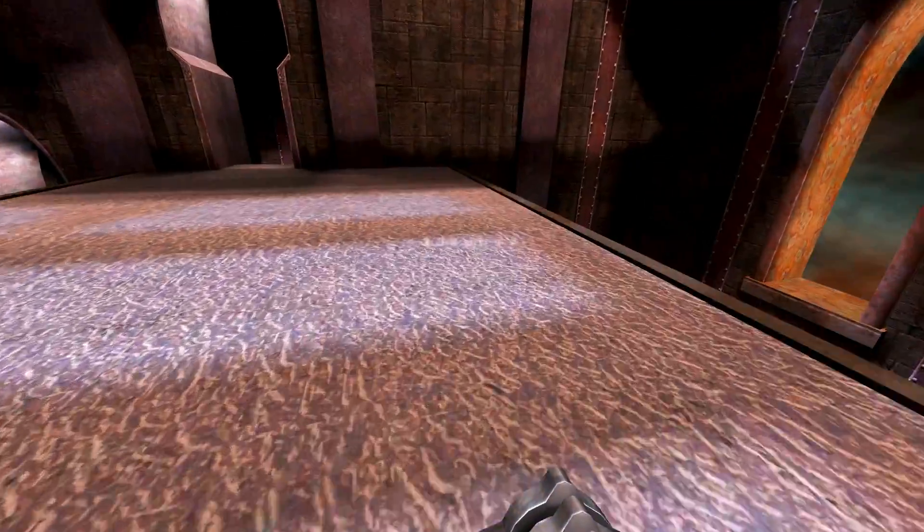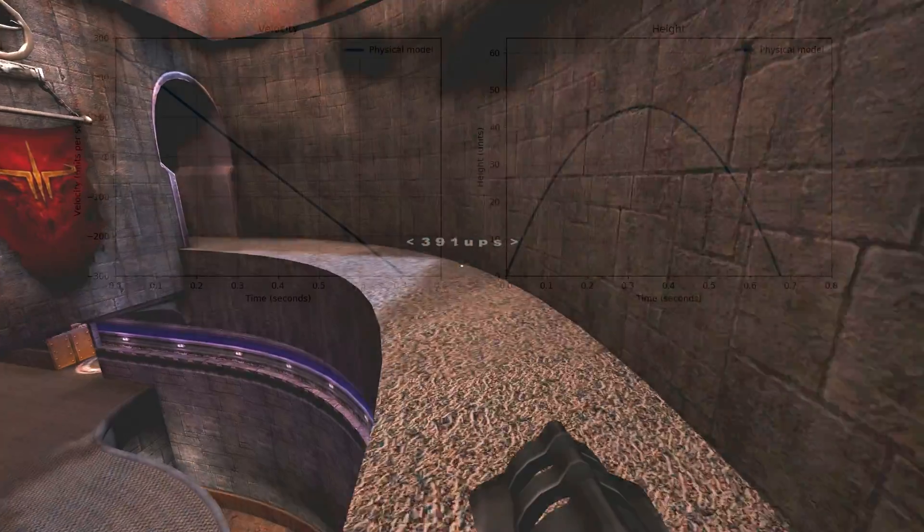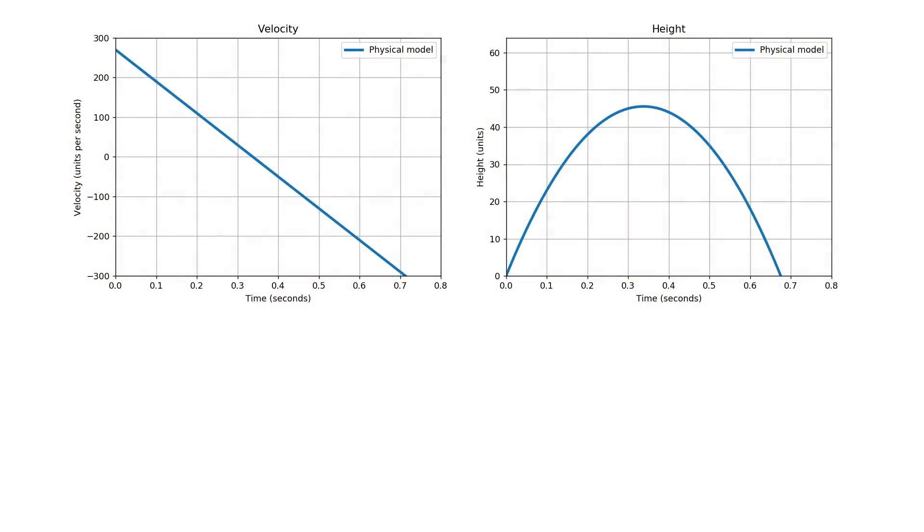Whilst moving horizontally this added height can enable the player to clear gaps that would otherwise be impossible. To understand why this happens, let's take a look at how a jump in Quake 3 would work with real physics.